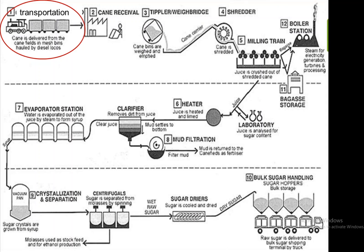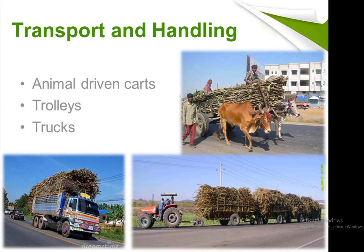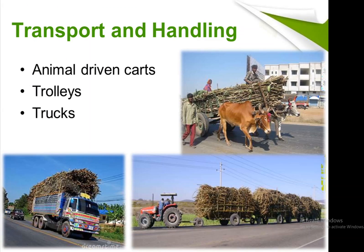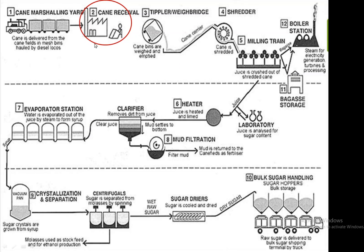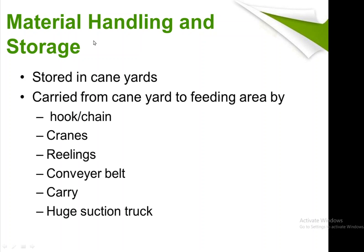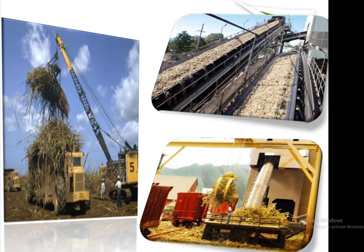As we can see in the flow diagram, our first step after harvesting is transportation and handling, where animals driving carts, trolleys, and trucks are used. The second step is cane receival — material handling and storage. Sugarcane is stored in cane yards and carried to the feed area by hook-chain cranes, railings, conveyor belts, and suction trucks.